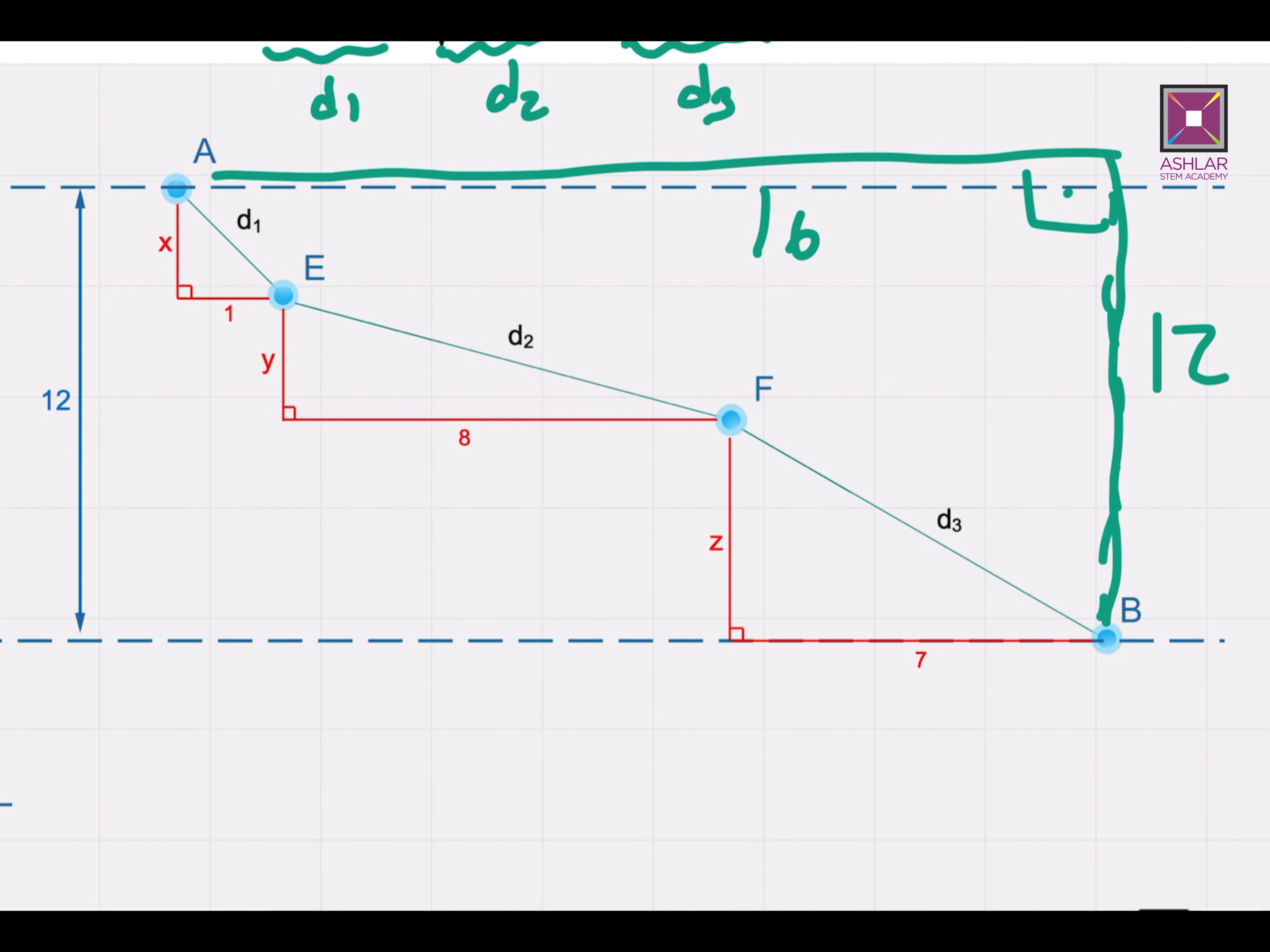So if we make points A, E, F, and B colinear, in other words, if we can put them all on the same straight line, the distance between A and B would be the shortest. And this is going to be the minimum value of the function F.